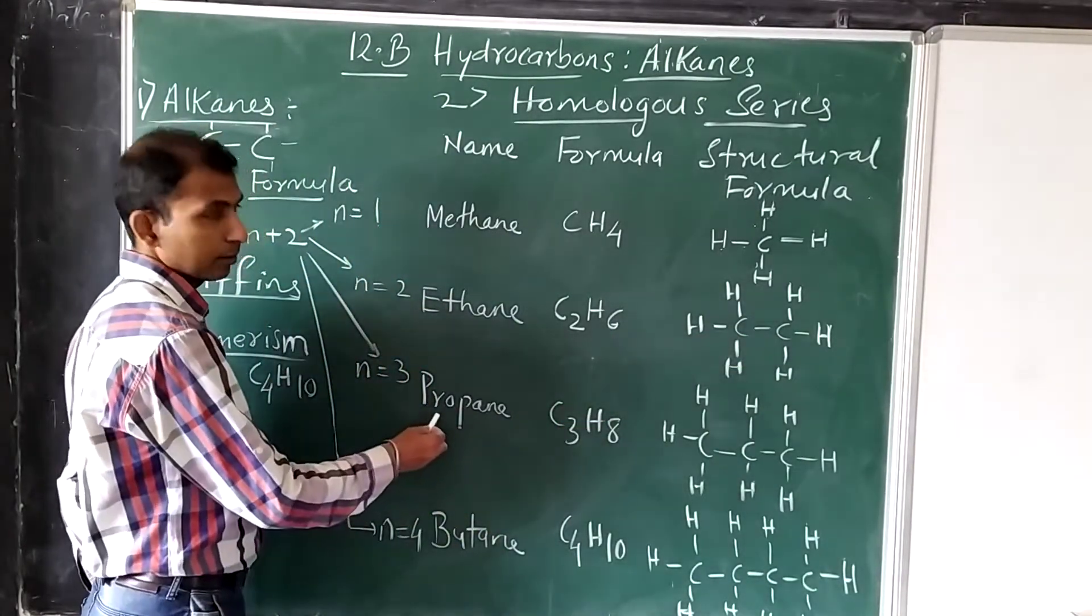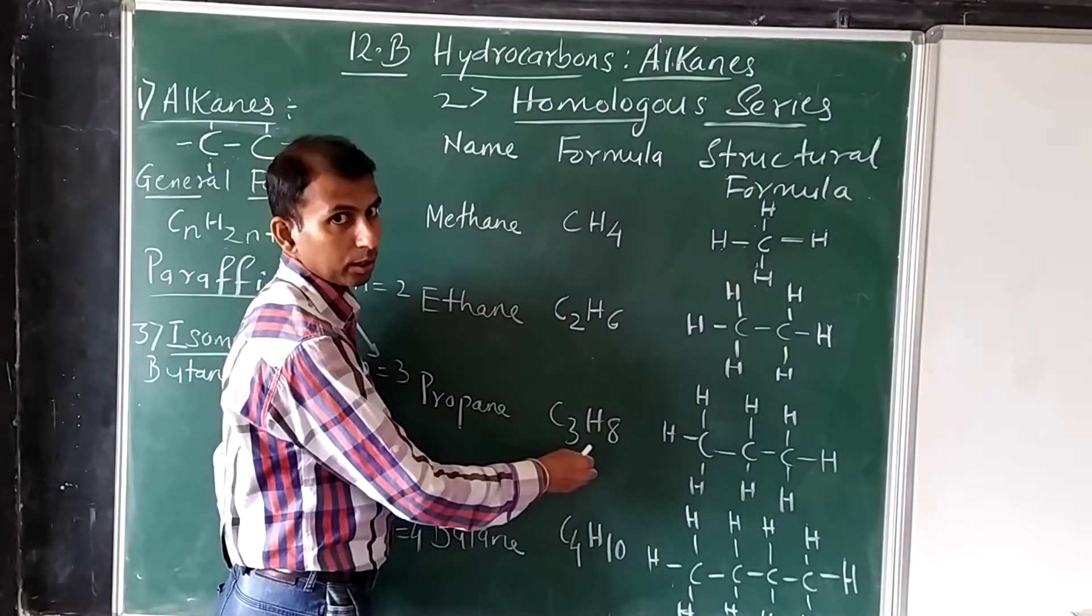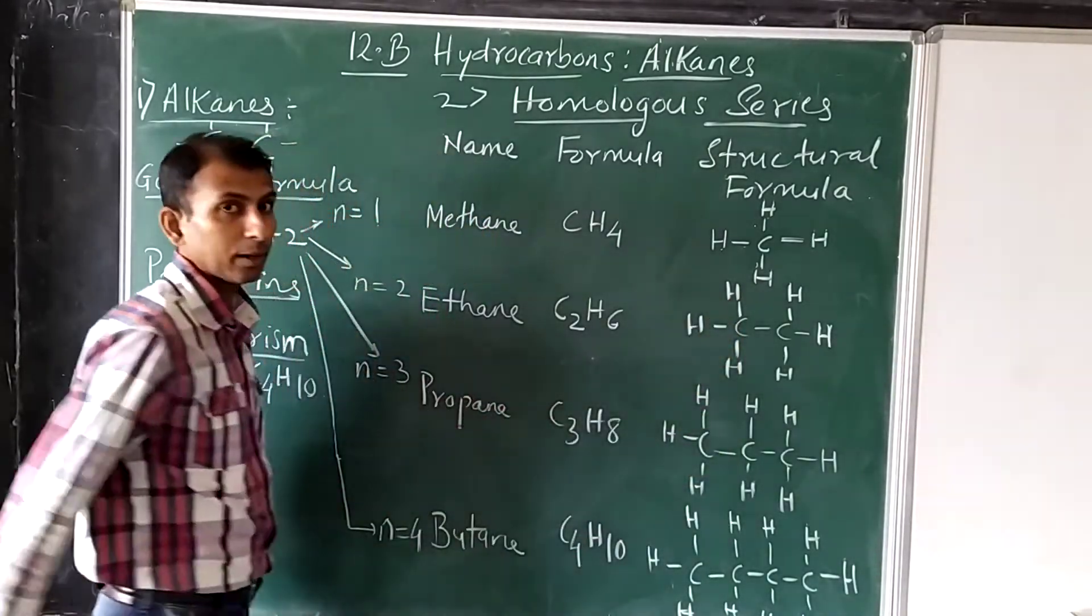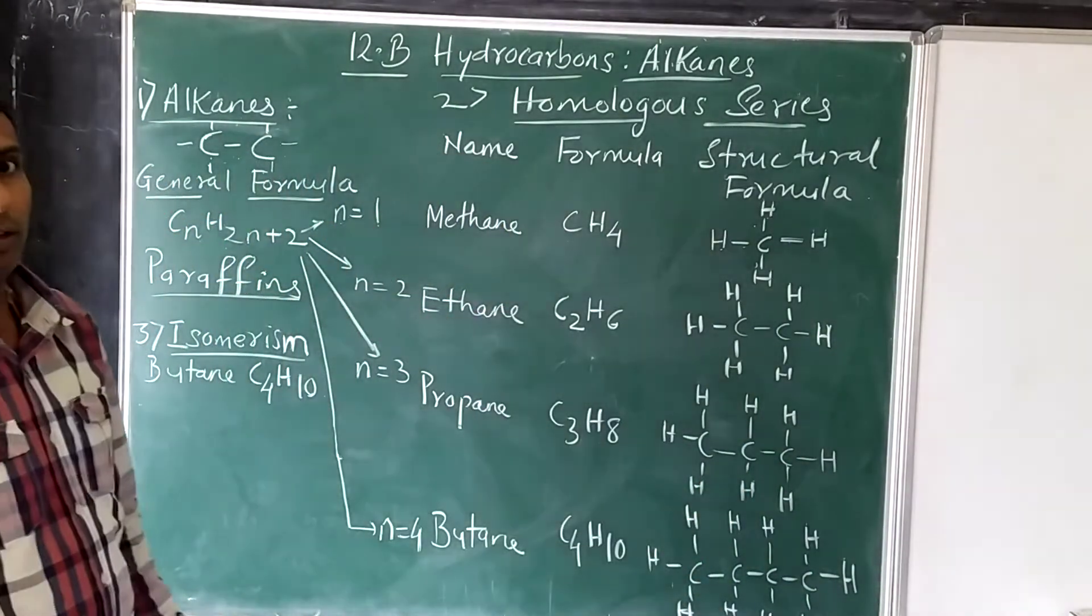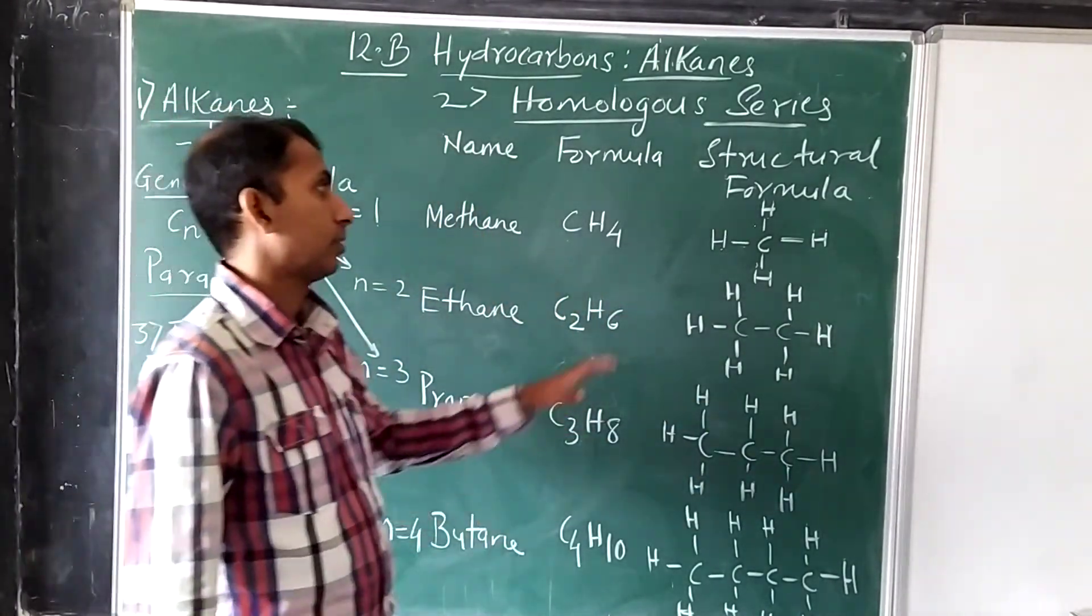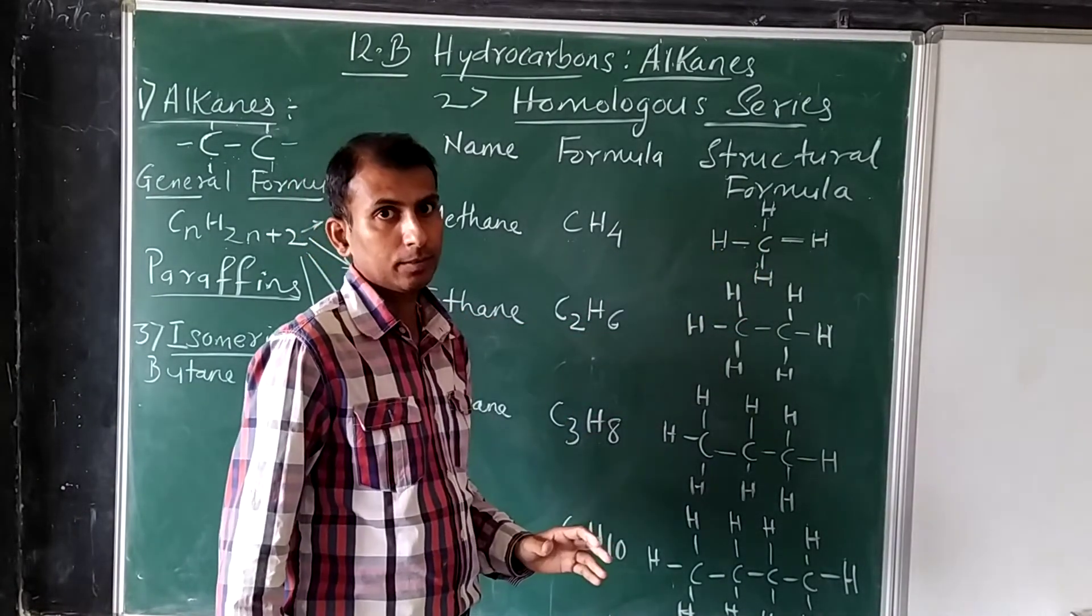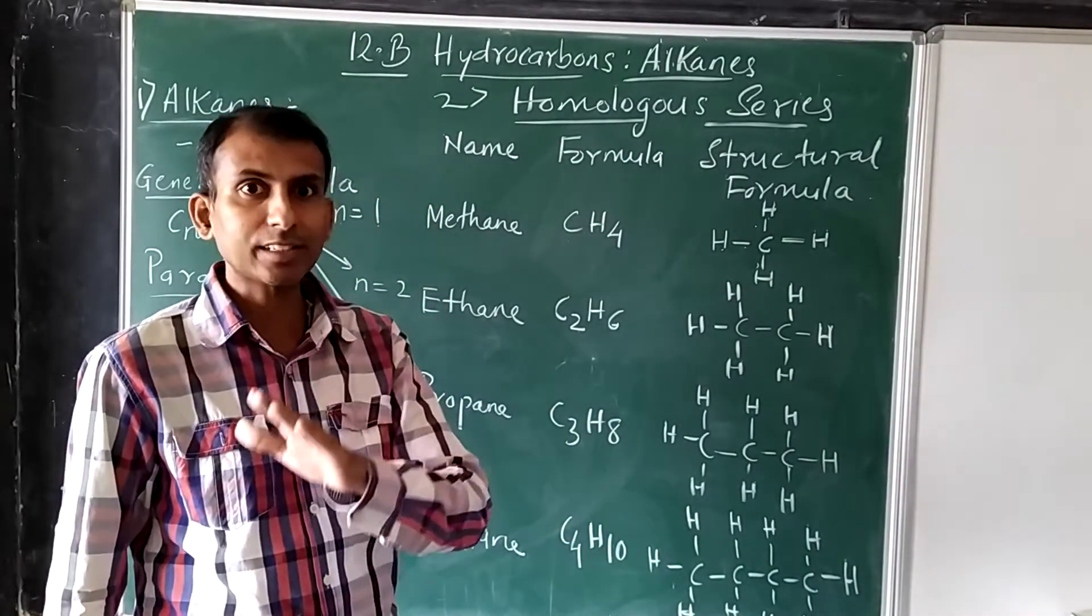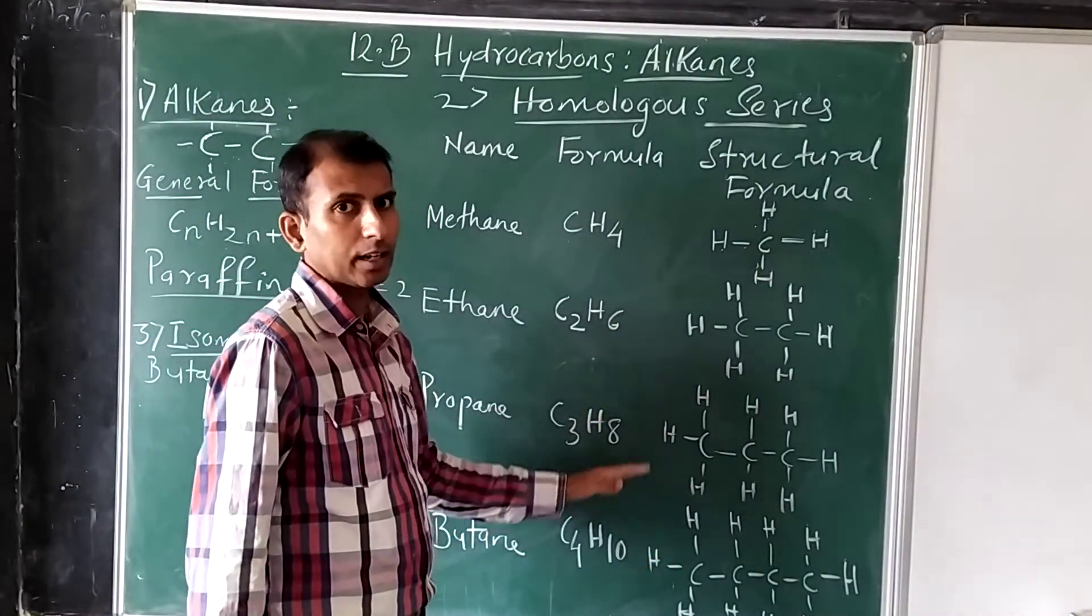The next one will be propane, n equals 3, C3H8. Everywhere in the structural formula you can see that the carbon atoms are having 4 valency. That is, the tetravalency of carbon atoms are satisfied by single single covalent bonds. That is why these are all examples of alkanes.